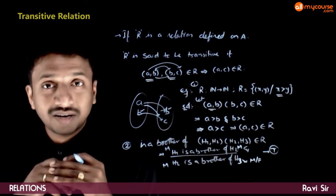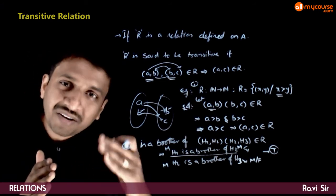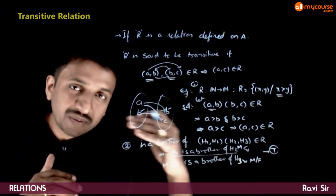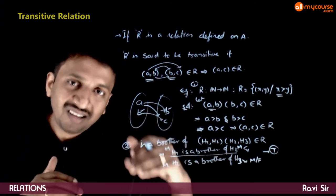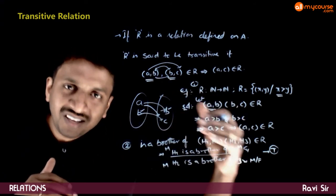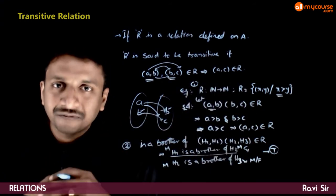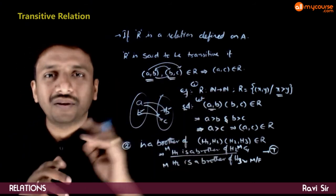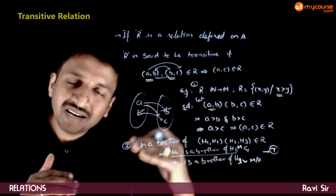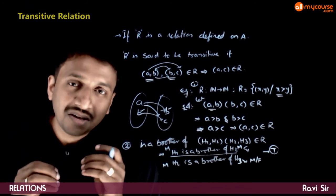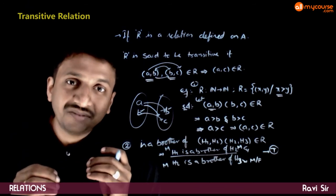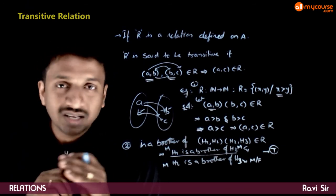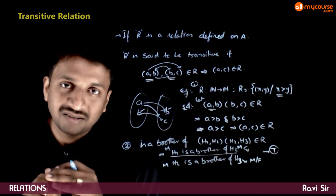So why is it called a transitive relation? Because the relation can be transferred. If A is a brother of B, B is a brother of C, C is a brother of D, B is a brother of E, and E is a brother of F, then I can say that A is a brother of F. The relation can be transferred — that is why it is called a transitive relation.